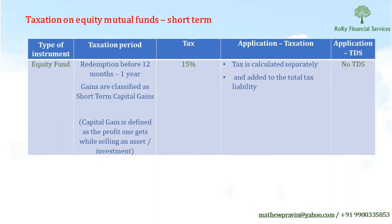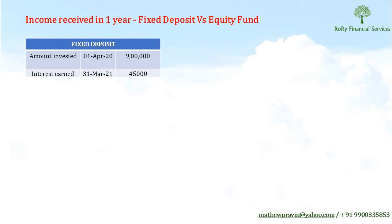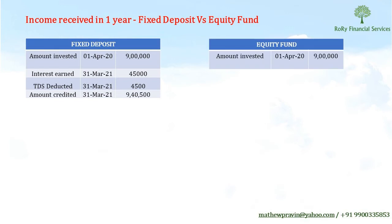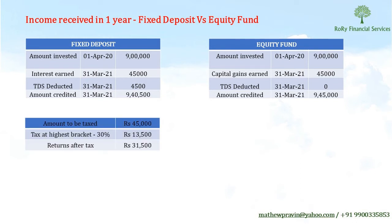Here there is no application of TDS — that means you will get the full amount. Let's look at income received in one year: fixed deposit versus an equity fund. In a fixed deposit, if I invest 9 lakh rupees and at the end of one year I earn 5% on that — that is 45,000 rupees — TDS of 4,500 will be deducted, and I will get back 9 lakhs plus 45,000 minus 4,500, which is 40,500 — so totally 9 lakhs 40,500 rupees. In an equity fund, if I had invested the same 9 lakhs and my return is also 5%, I will get the entire amount back when I redeem — that is 9 lakhs plus 45,000 — because there is no TDS.